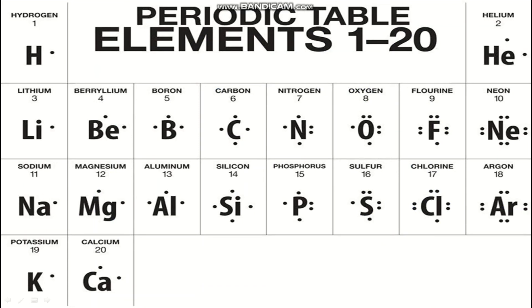Let's look at nitrogen. To draw the Lewis dot structure for nitrogen, all you have to do is draw the symbol for nitrogen and place all the valence shell electrons around it. Here are the first twenty elements with their Lewis dot structures. You can notice that the columns or groups are the same, and this explains why they have the same chemical reactivity and why they will form the same kind of bond.